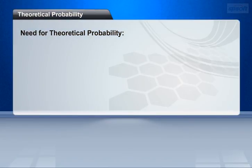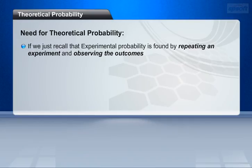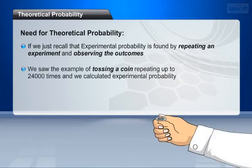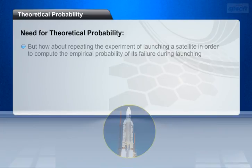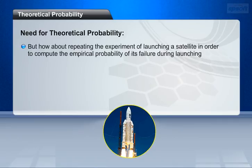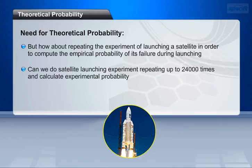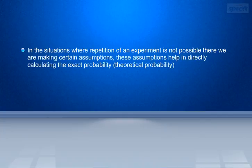Let us now see the need for theoretical probability. Experimental probability is found by repeating an experiment and observing the outcomes. We saw the example of tossing a coin repeated up to 24,000 times to calculate experimental probability. But how about repeating the experiment of launching a satellite in order to compute the empirical probability of its failure during launching? We cannot do that 24,000 times because launching a satellite is very expensive. Repeating an experiment is expensive or unfeasible in many situations. In situations where repetition is not possible, we make certain assumptions that help in directly calculating the exact probability — that means theoretical probability.